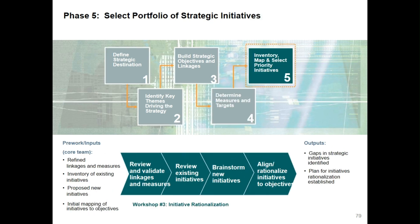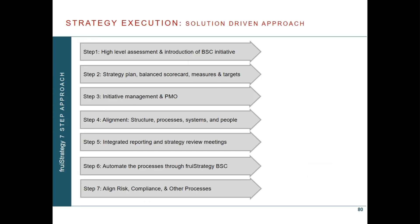Phase 5 is to select a portfolio of strategic initiatives. The workshop is conducted with inputs of refined linkages and measures, inventory of existing initiatives, proposed new initiatives, and initial mapping of initiatives to objectives. The outputs are: gaps in strategic initiatives identified, and a plan for initiatives rationalization established. We adopted a 7-step approach to achieve strategy execution.